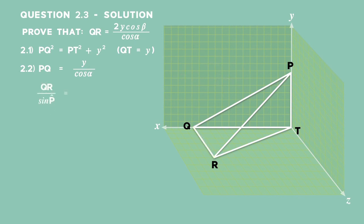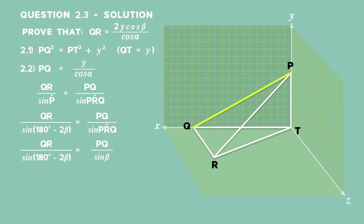QR over sine of angle P equals PQ over sine of angle PRQ. Substituting values for the two angles, we get QR over sine of 180 degrees minus 2 beta is equal to PQ over sine beta. Simplifying, we get QR over sine 2 beta, since sine of 180 degrees minus 2 beta is equal to sine 2 beta by reduction formula. And that's equal to PQ over sine beta. Multiply both sides of the equation by sine 2 beta to get QR by itself on the left-hand side. So you get QR is equal to PQ multiplied by sine 2 beta and divided by sine beta. We found that expression in 2.2 for side PQ. Now we can substitute that into our equation.